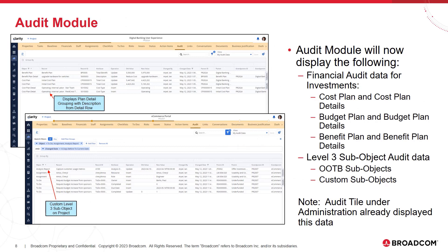The last enhancement we made was to the audit module. In this module, we're now displaying financial audit data for cost plans, cost plan details, budget plans, budget plan details, benefit plan, and benefit plan details. Additionally, we enhanced the module to display level three sub-object audit data, and that will be for both out-of-the-box sub-objects and custom sub-objects. One thing that's important to note: these data elements that we added to the audit module were already supported in administration on the audit tile.